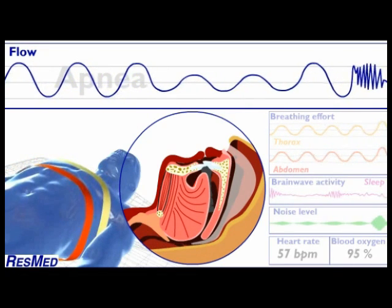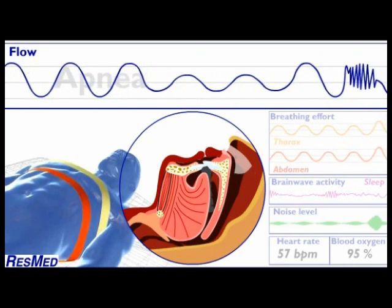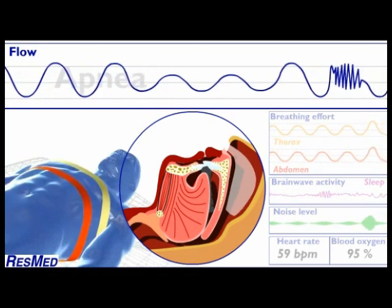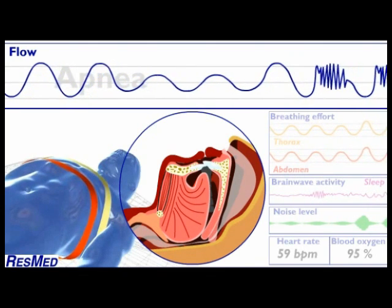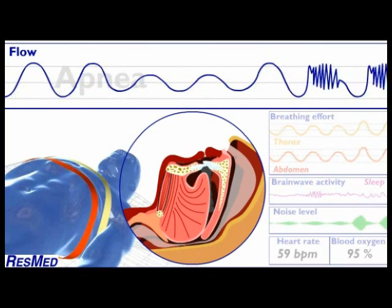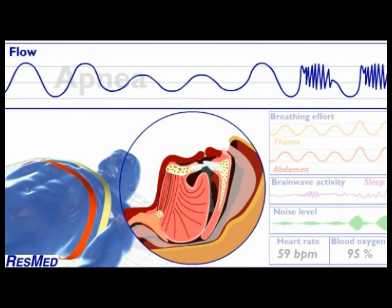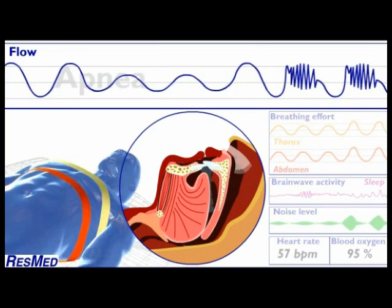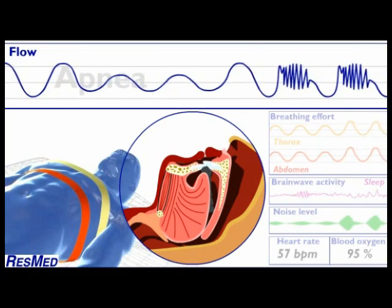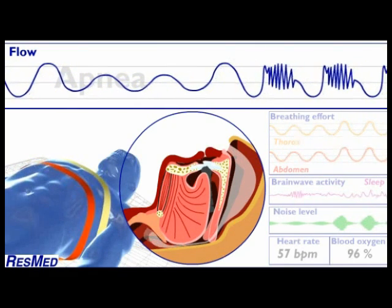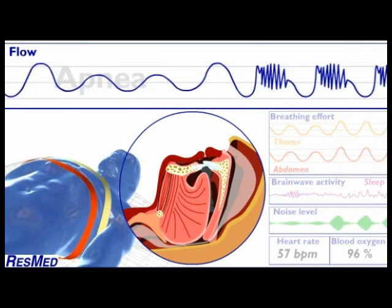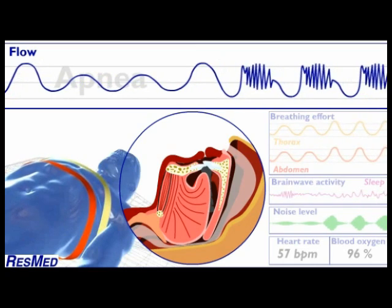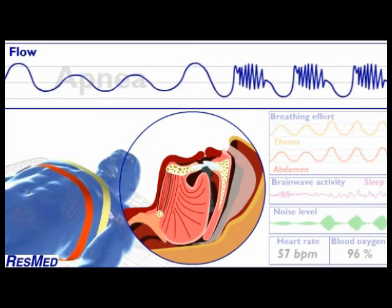As the muscles in the upper airway start to relax, the suction effect of each inward breath tends to draw the soft tissues down towards the back of the airway. Over a series of breaths, the airway progressively narrows and the airflow decreases.